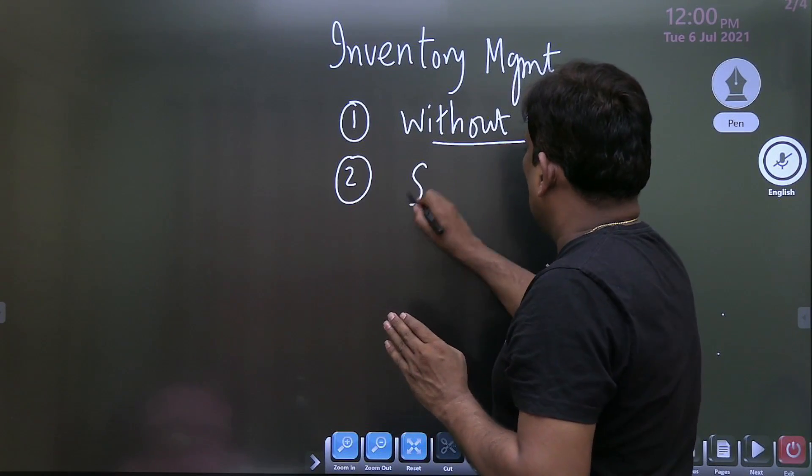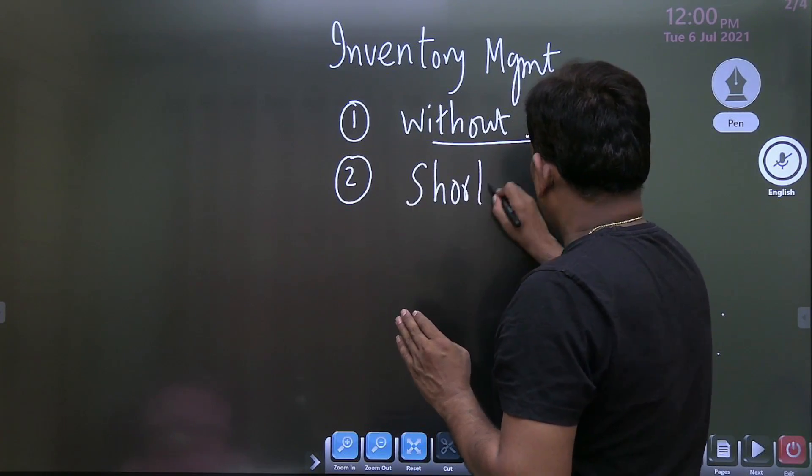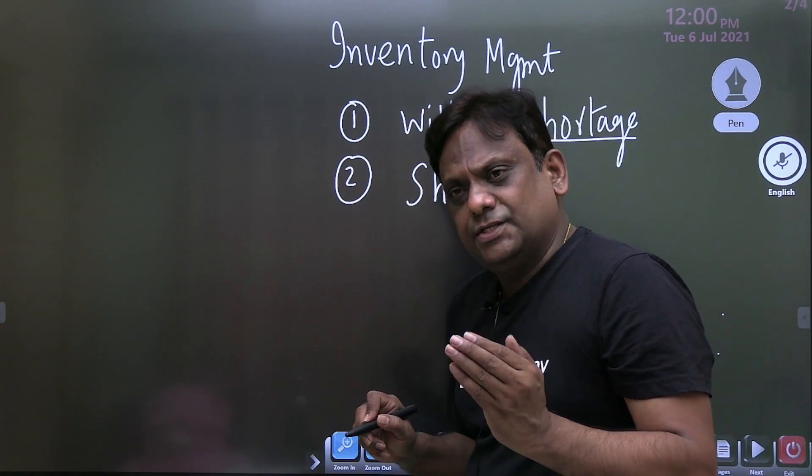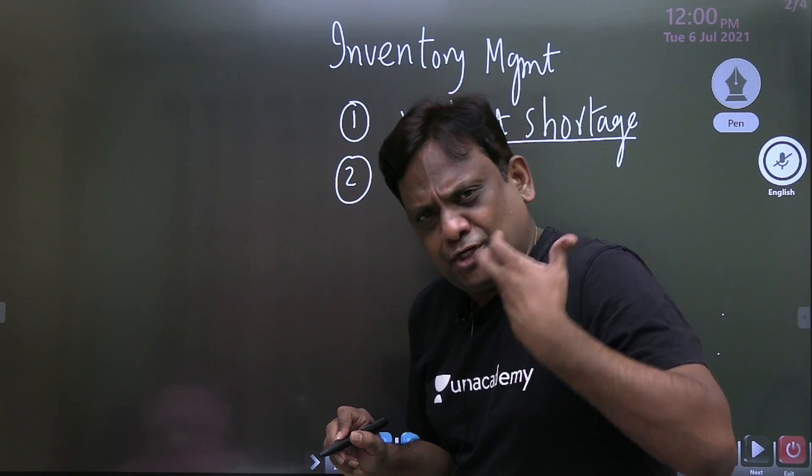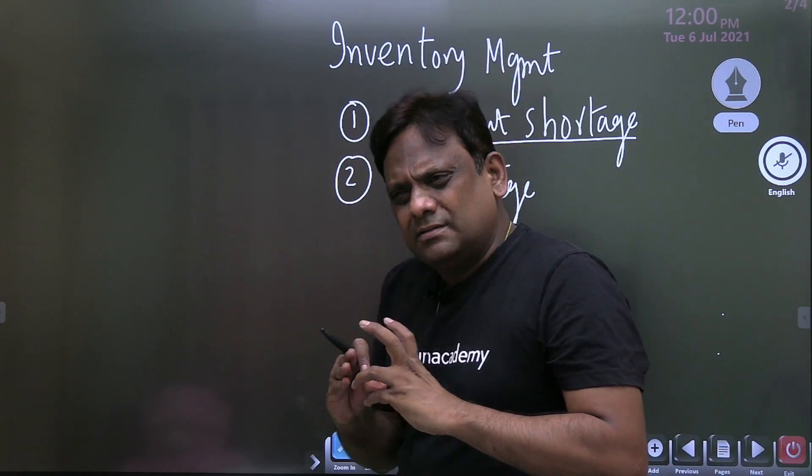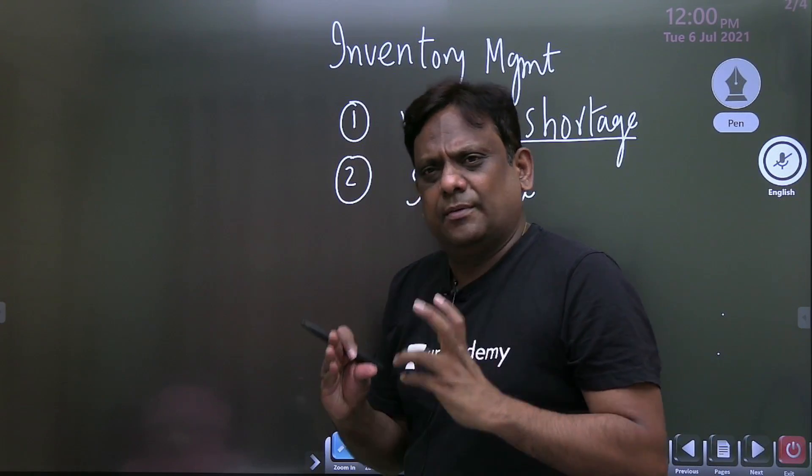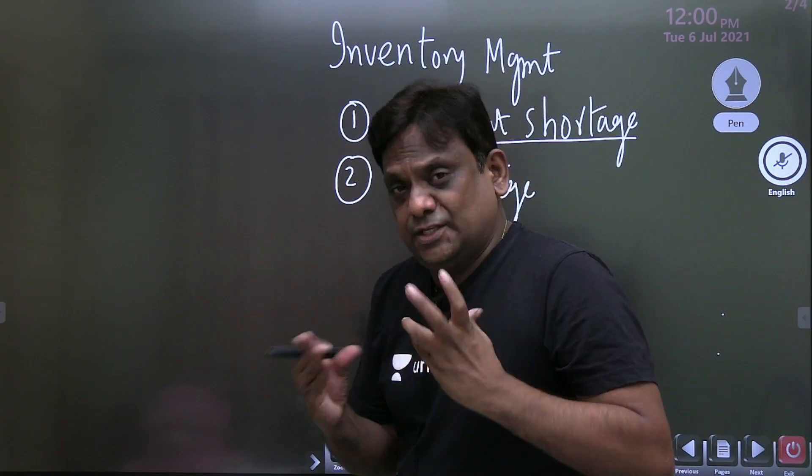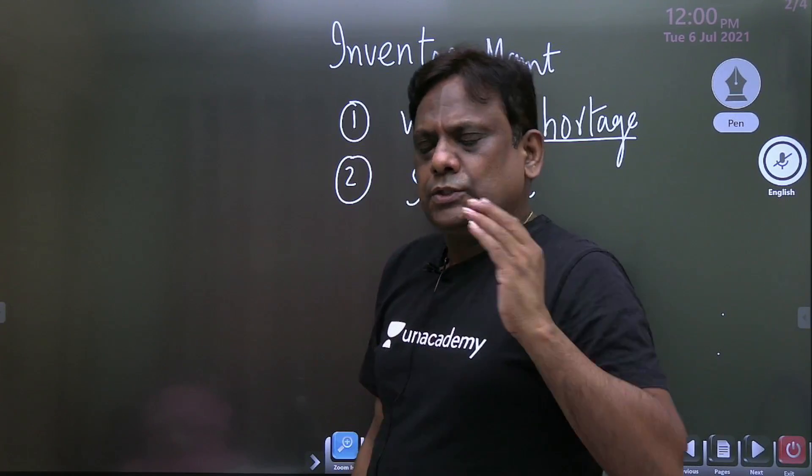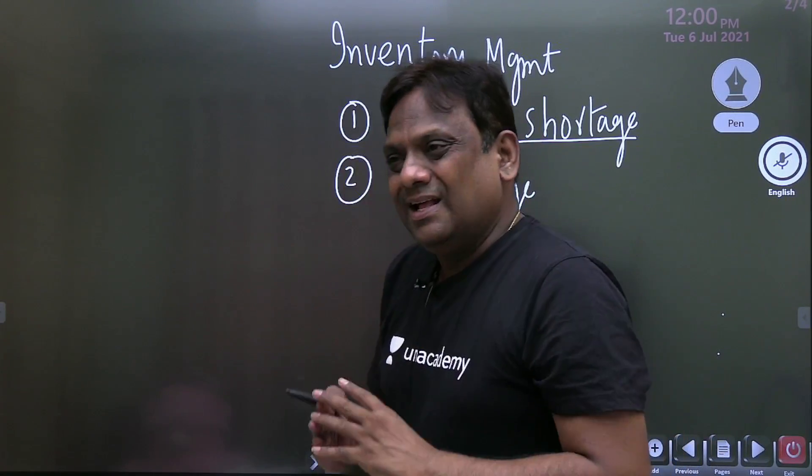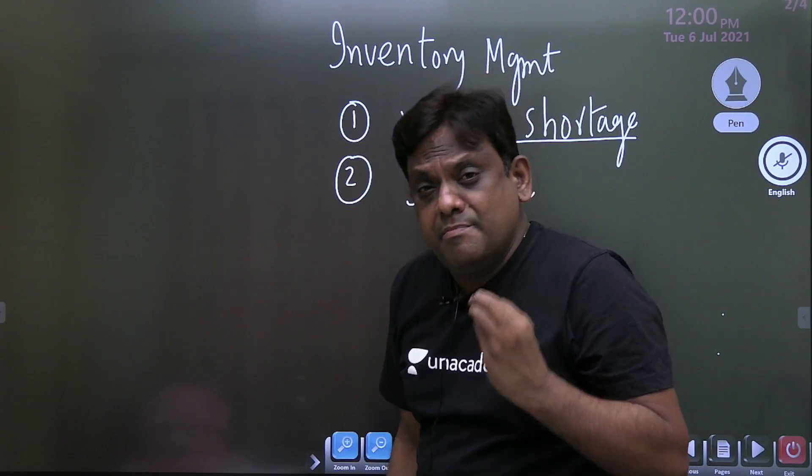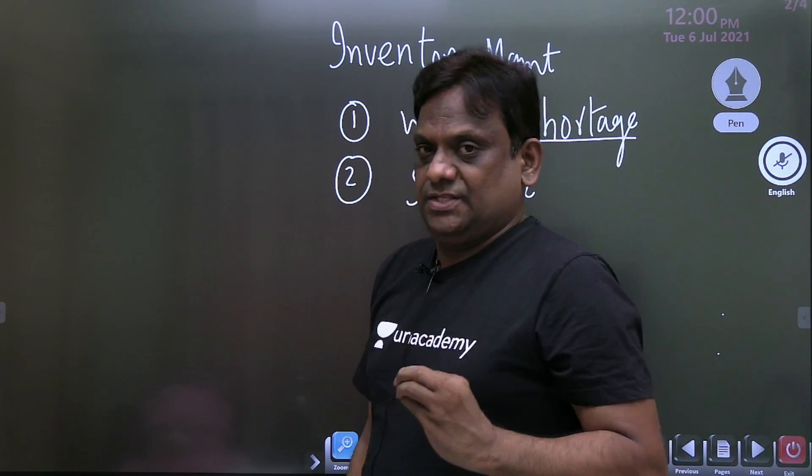Then we will be going for with shortages. And here again, that is production model with shortages. That derivation is actually generally questions have not come from that area, but we can expect, we don't know because clearly it is given in the syllabus inventory models. So I will be going for that also. Later on, we will be taking up wide varieties of questions, maybe around 50 plus questions in this.